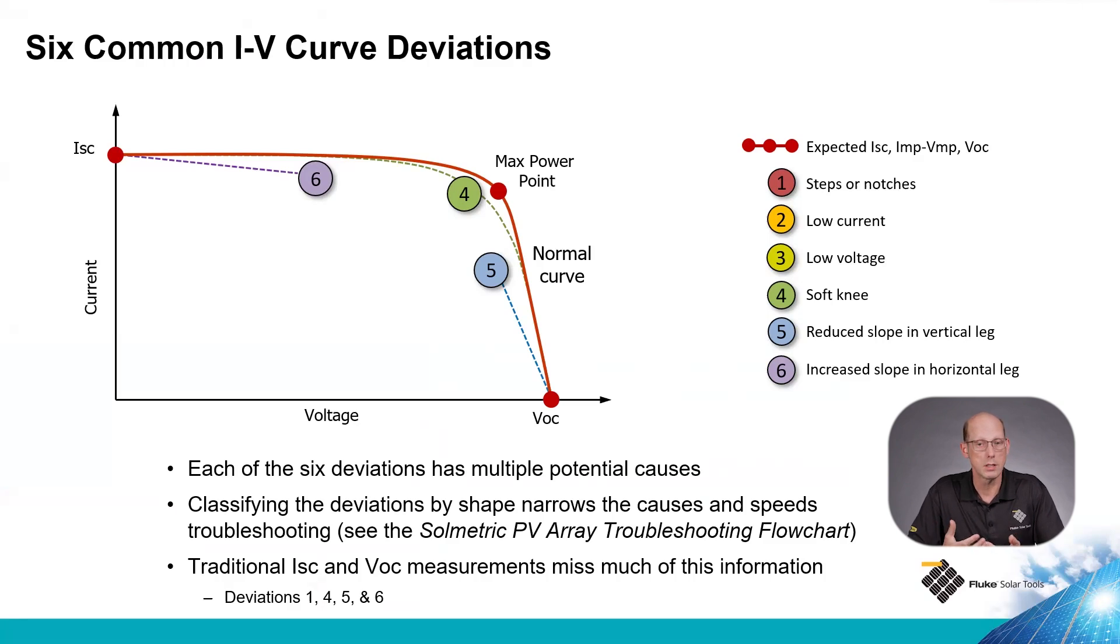One thing I want to point out is that an interesting thing and a benefit of IV curve tracing is that four out of these six deviations cannot be seen with just voltage or current measurement. If you did voltage or current measurements with four of these deviations, you would see the expected result that would match the manufacturer's data. Only with IV curve testing can you see those four types of deviations.